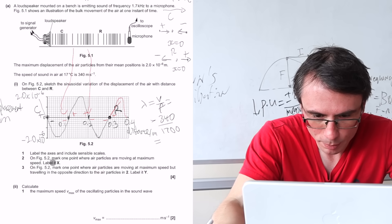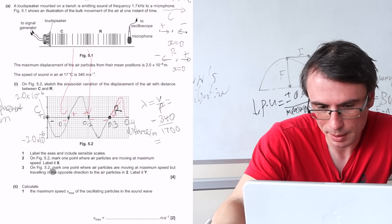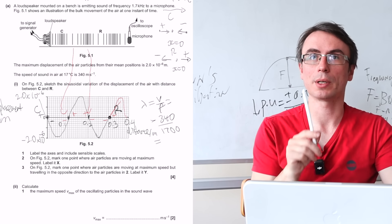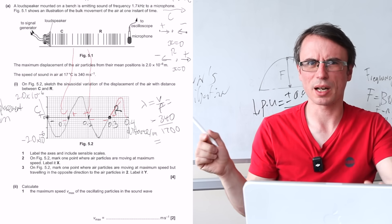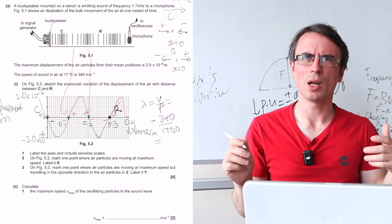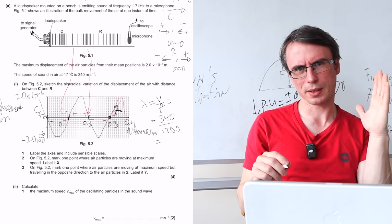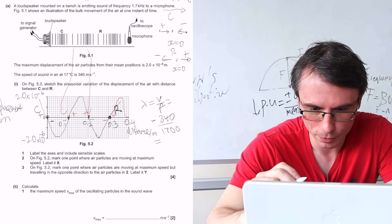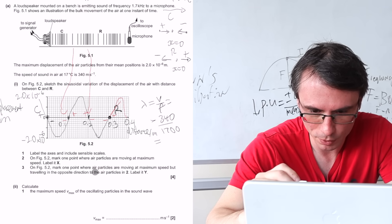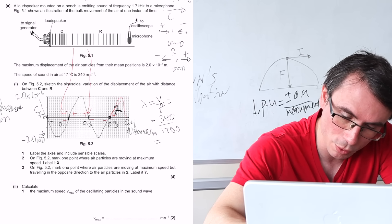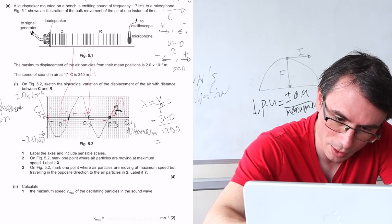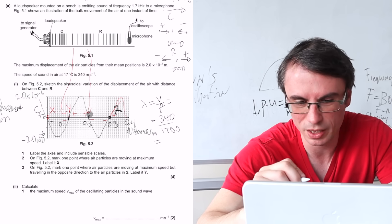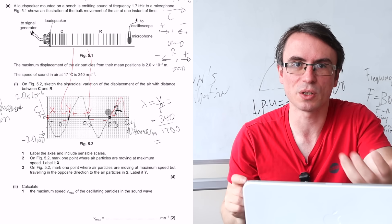On figure 5.2, mark one point where particles are moving at maximum speed, labelled X. This happens whenever we cross the x-axis, because the particles move like they do in simple harmonic motion — the largest possible speed is as they pass through equilibrium where displacement x equals zero. We also need to mark a point where particles move at maximum speed but in the opposite direction, labelled Y. Any two adjacent x-intercepts will do.